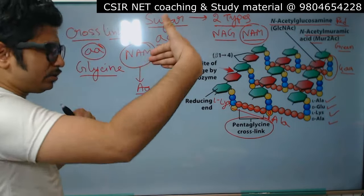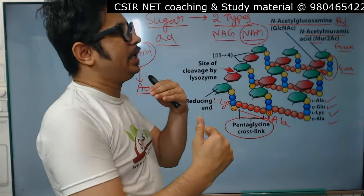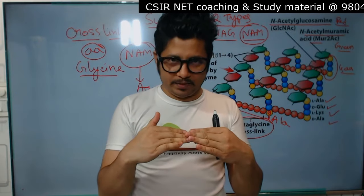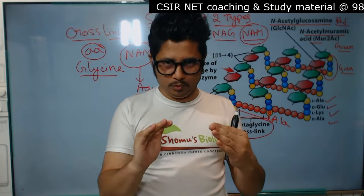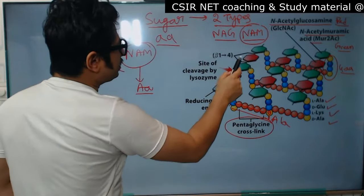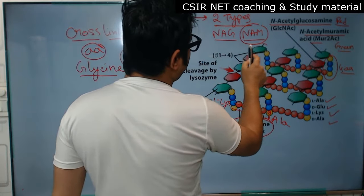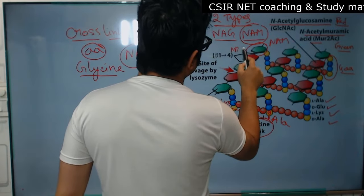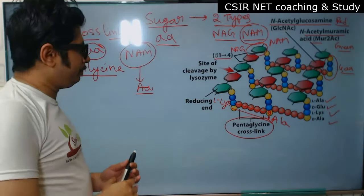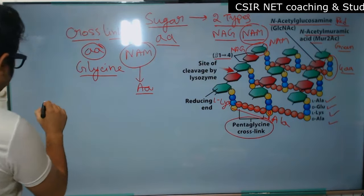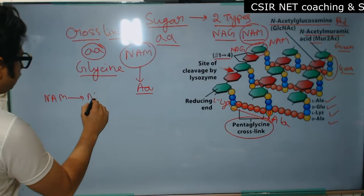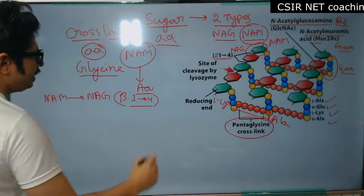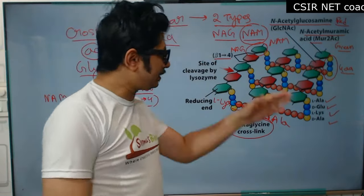If we talk about how the sugars are connected — when we talk about the structure of carbohydrates we talk about the way bonds are created: alpha 1,2 or beta 1,4 and so on. Here the bonds created between NAG and NAM are beta 1,4 linkage. Between NAM and NAM it is also beta 1,4 linkage. That is how the sugar backbone is connected.